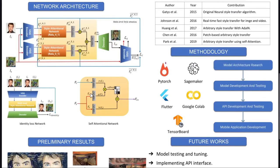This is the self-attention network model. Each image will go through it and produce a number representing the importance of a specific feature in that image. In the methodology, the whole project contains three main components: model development and testing, API development and testing, and mobile application development.